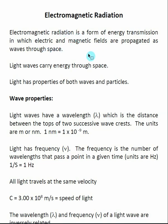Electromagnetic radiation is a form of energy transmission in which electric and magnetic fields are propagated as waves through space. That is more of the formal definition. Really, when we talk about electromagnetic radiation, most people tend to think about it in terms of light waves.